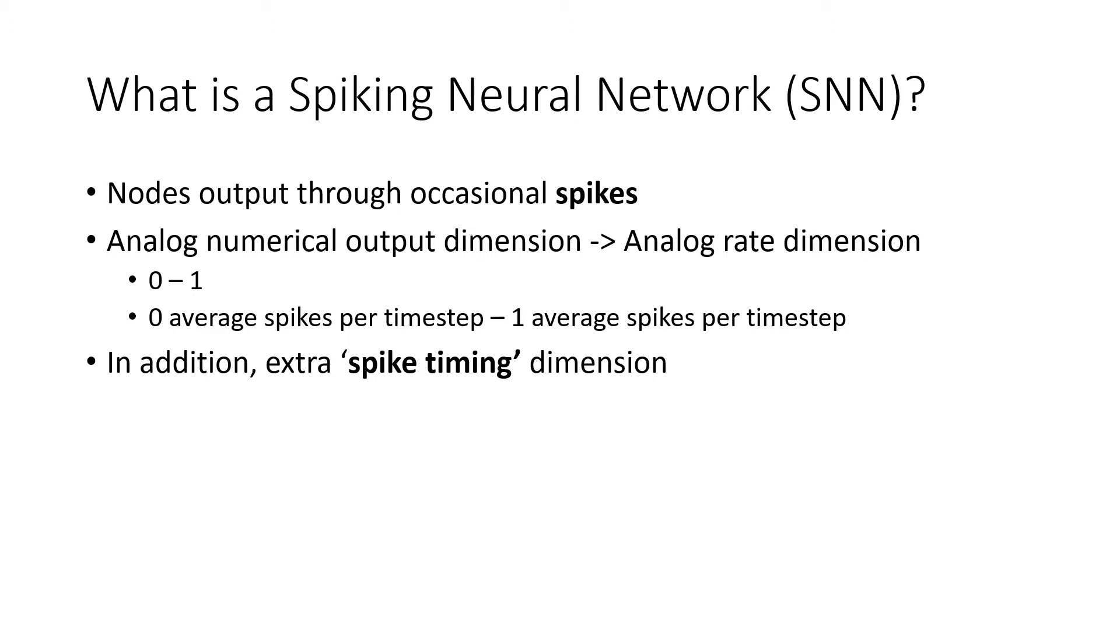A spiking output is normally considered zero except when it's spiking. When it's spiking for an instant you get a little impulse. This means that the traditional analog conversion of the actual output in a given time is converted into an analog output of the rate around a given time, so the number of spikes per timestep around a certain time period.